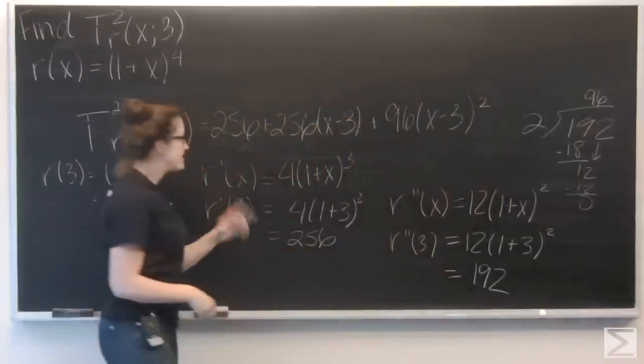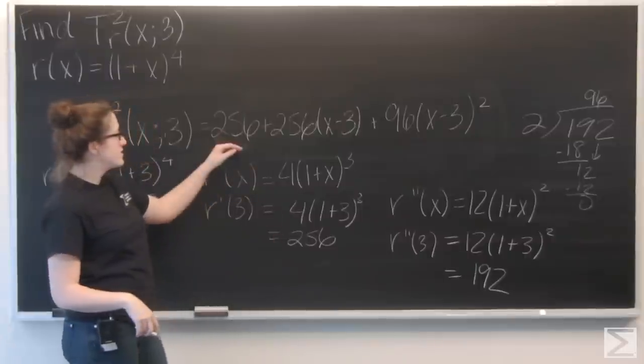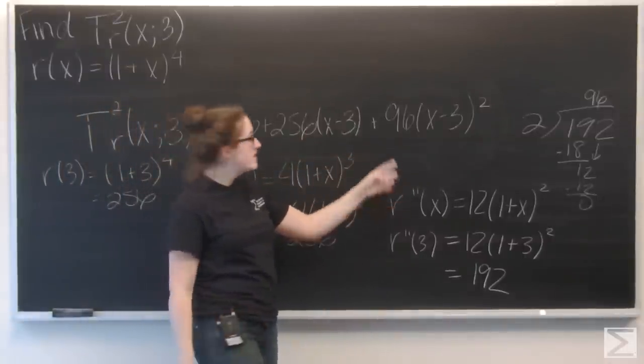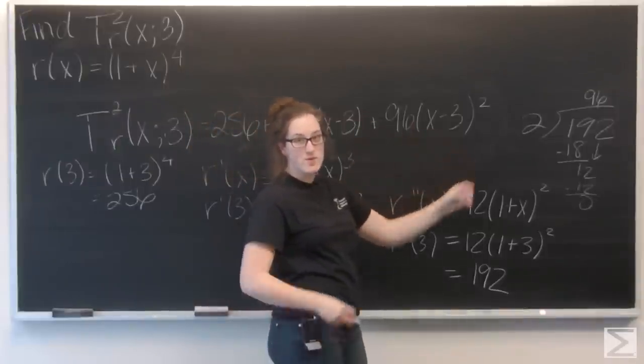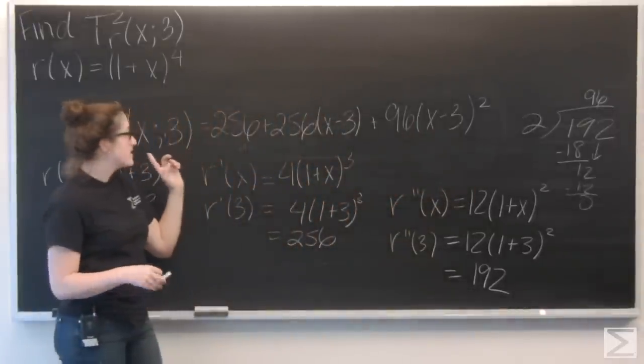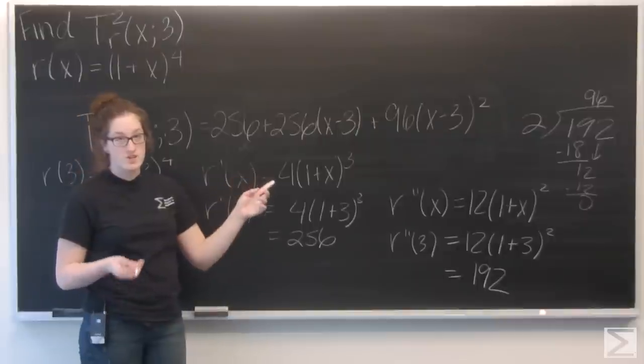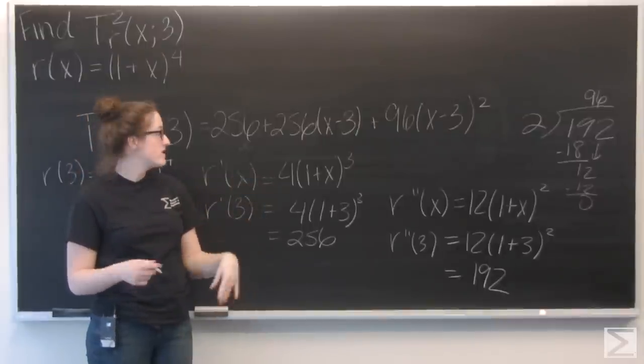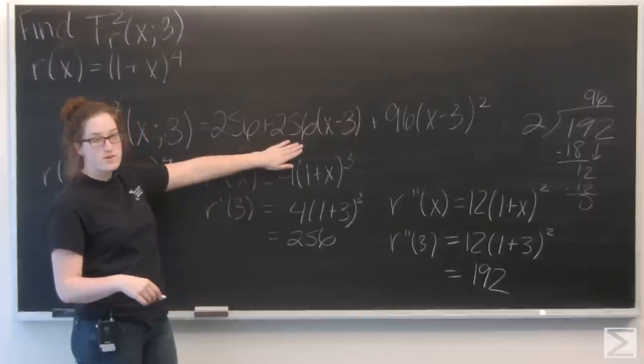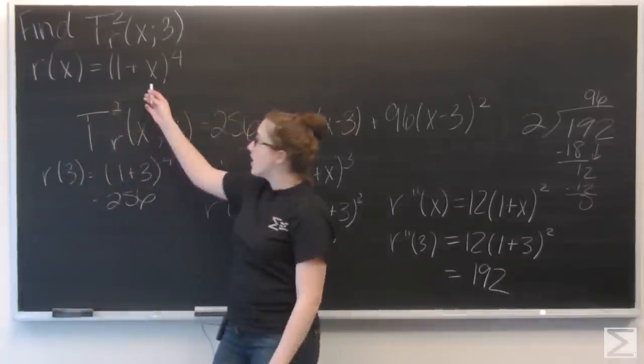So my second order Taylor polynomial is 256 + 256(x-3) + 96(x-3)². And then to compare this Taylor series to the actual function, you're just going to go in your calculator or Wolfram Alpha or something and plug in this polynomial and r(x).